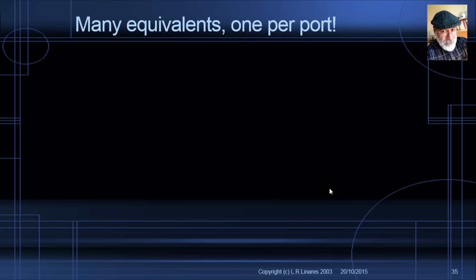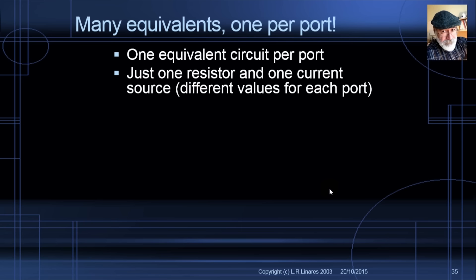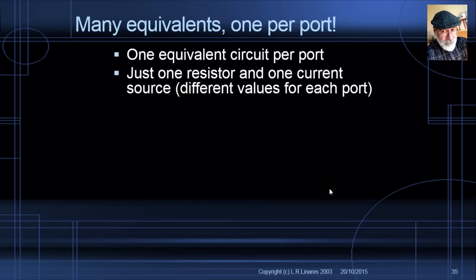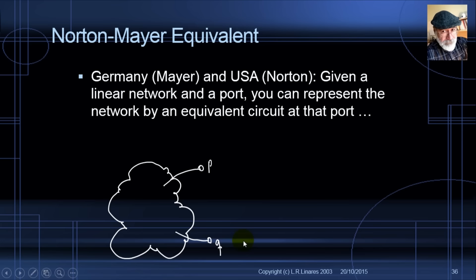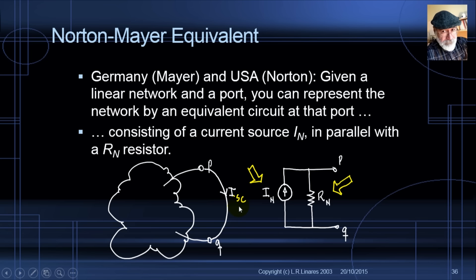That is not the only way of doing business with equivalent circuits. Edward Laurie Norton from the USA and Hans Ferdinand Meyer from Germany came up with an alternative: given a circuit and a port, we can represent the circuit with just one resistor in parallel with a current source. We need to find that Norton current source and the Norton resistance.